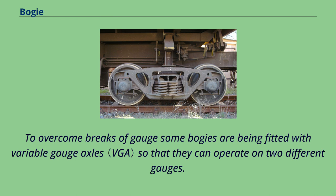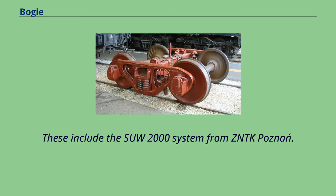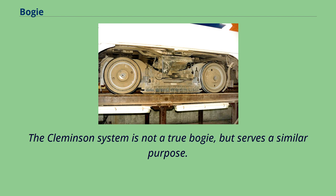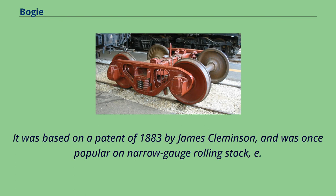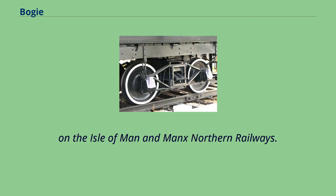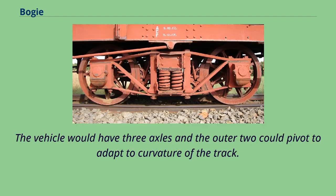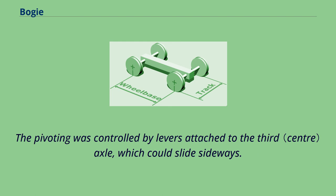To overcome breaks of gauge, some bogeys are fitted with variable gauge axles so they can operate on two different gauges. These include the SU-2000 system from ZNTK Poznan. The Clementson system is not a true bogey but serves a similar purpose. Based on a patent of 1883 by James Clementson, it was once popular on narrow-gauge rolling stock, e.g., on the Isle of Man and Manx Northern Railways. The vehicle would have three axles, and the outer two could pivot to adapt to the curvature of the track, with pivoting controlled by levers attached to the third axle, which could slide sideways.